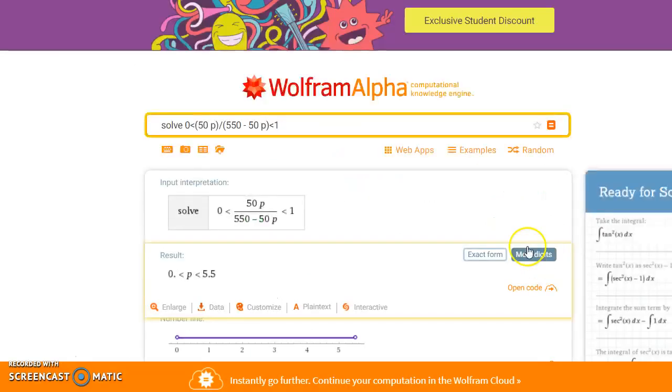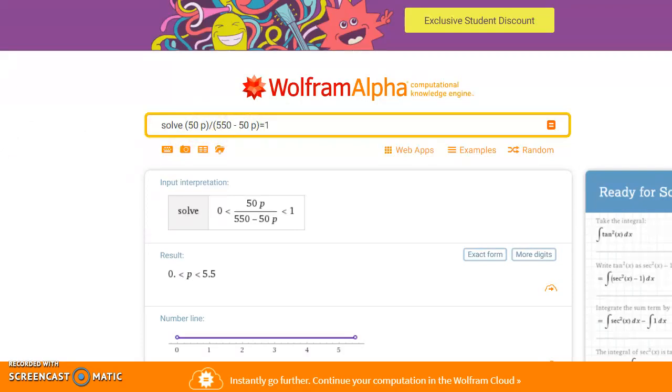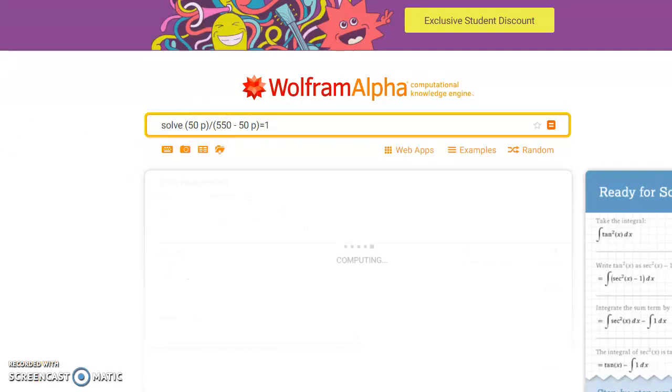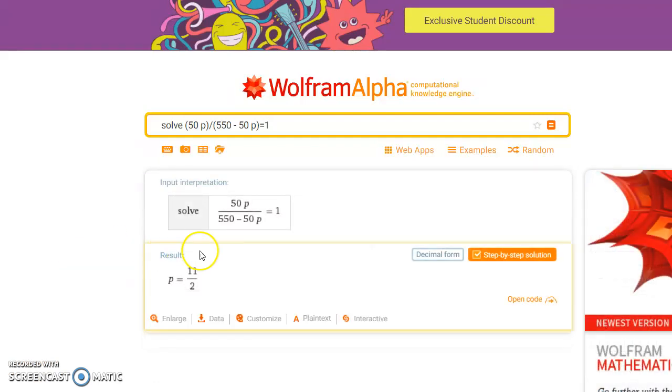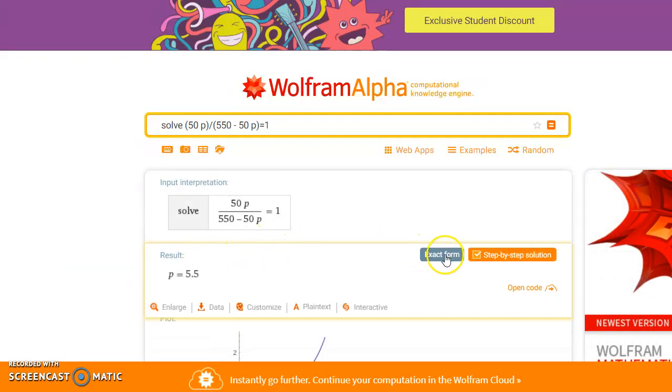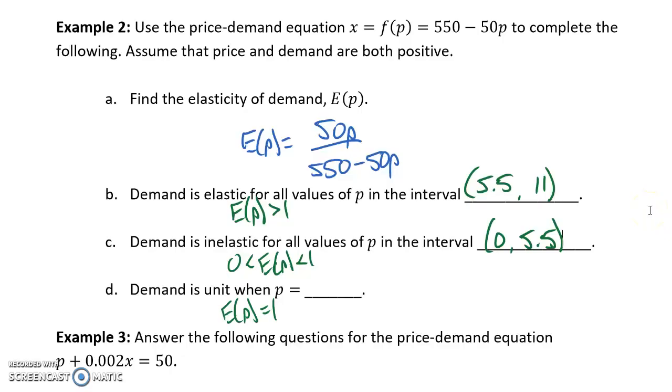And then in Part D, our last step would be figuring out when demand is unit. So, that's exactly when our function value is equal to 1. So, we would solve that elasticity of demand function equal to 1. And we would get 11 halves, or in decimal form, 5.5. Which makes sense, it would be exactly that tipping point between elastic demand and inelastic demand. So, if we charge $5.50 for our item, our demand would be unit.